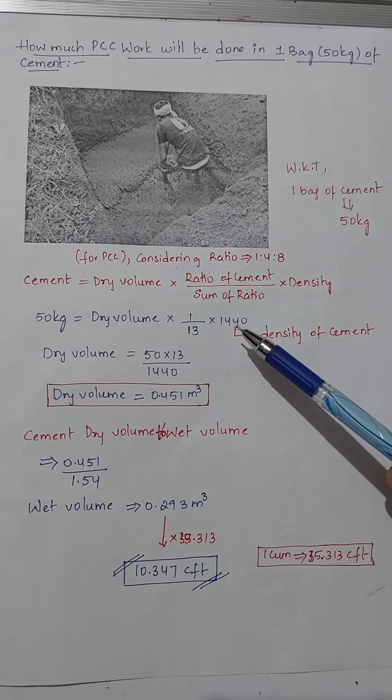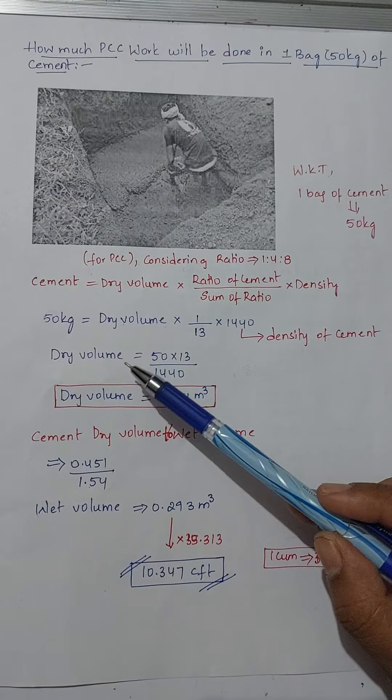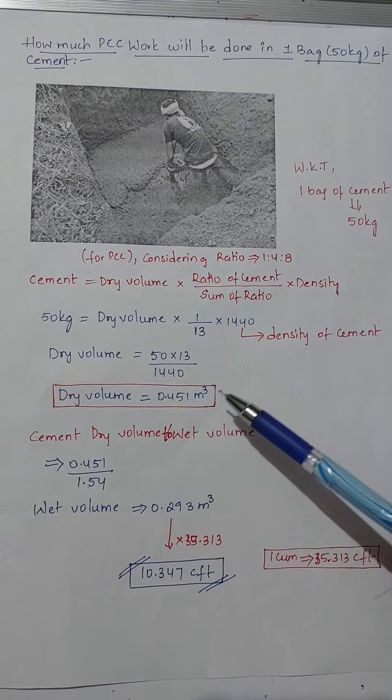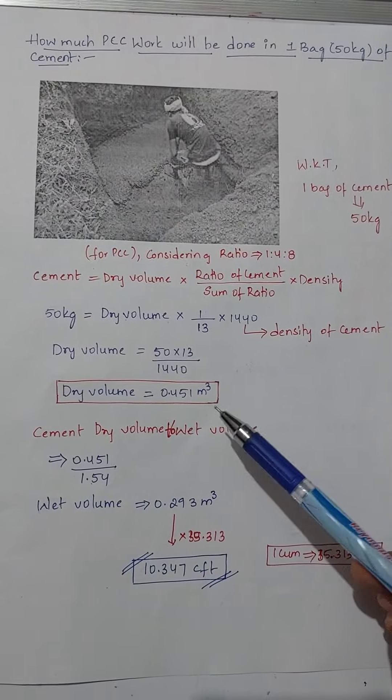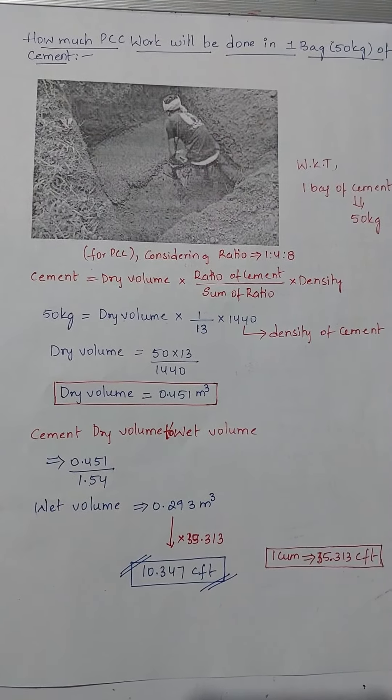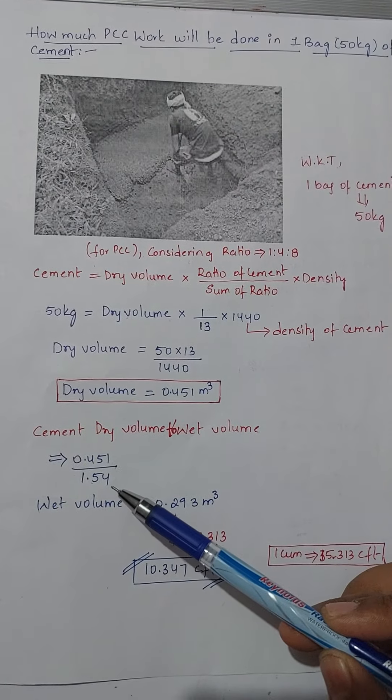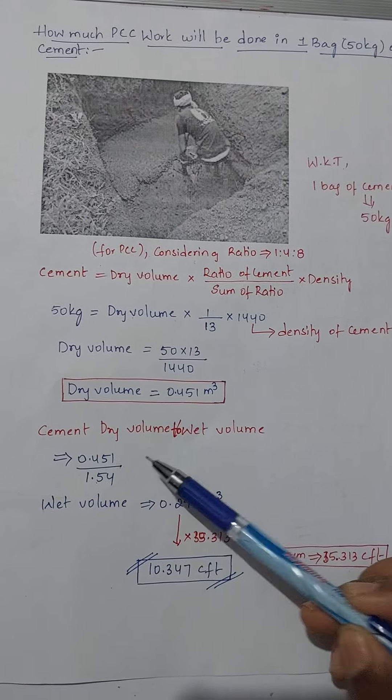So that we will get dry volume equals to 0.451 cubic meter. Now we will convert this dry volume to wet volume, so 0.451 by 1.54, this is standard value.